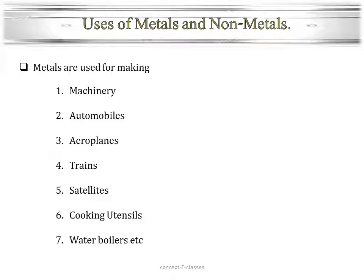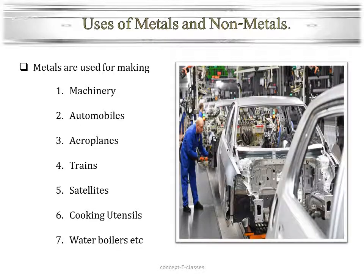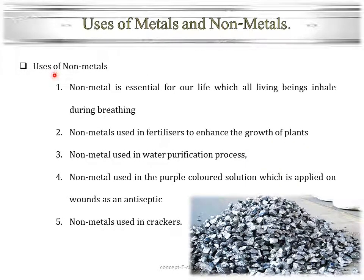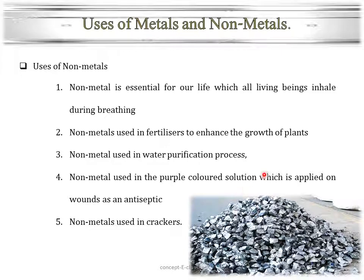Metals are used for making machinery, automobiles, aeroplanes, trains, satellites, cooking utensils, water boilers, etc. Nonmetals such as oxygen are essential for life — all living beings inhale it during breathing. Nonmetals such as nitrogen and phosphorus are used in fertilizers to enhance plant growth. Nonmetals are also used in water purification — for example, chlorine. Iodine solution, a nonmetal, is used as a purple-coloured antiseptic applied on wounds. Nonmetals like sulfur are also used for making crackers.